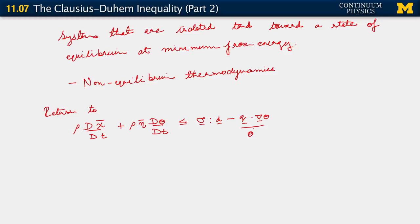What we're going to do now is rewrite the first term here as follows. We're going to write out that material time derivative of the Helmholtz potential using the chain rule. And we're going to recall in doing that that chi bar is a function of the strain and the temperature. What this lets us do is to write out that term as follows: we have rho times partial of chi bar with respect to E contracted with E dot.